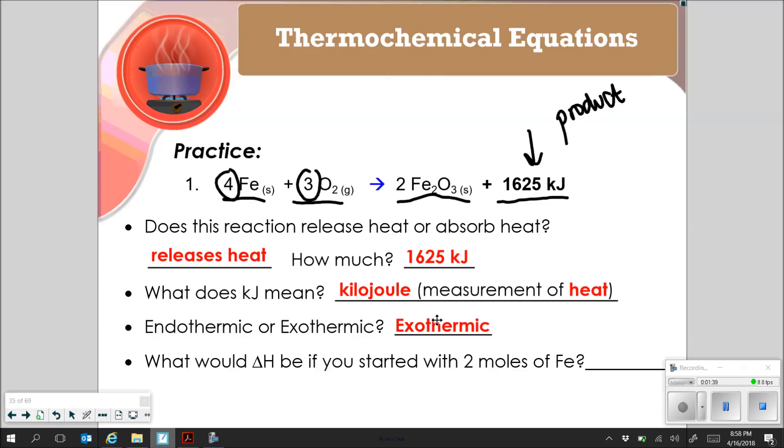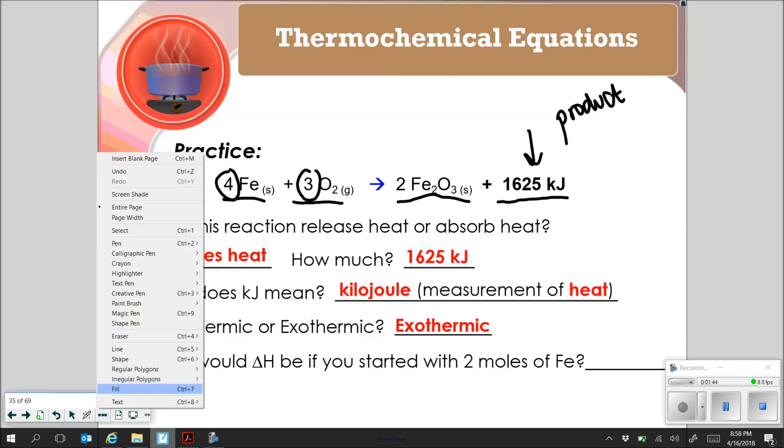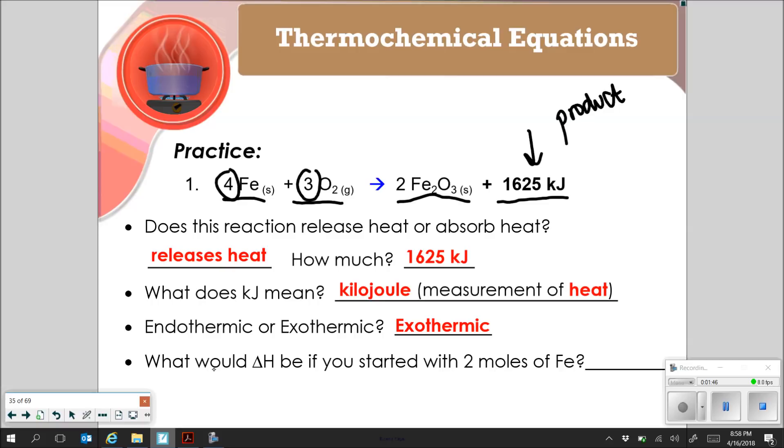What would delta H be if you started with 2 moles of Fe? I'm going to do this with dimensional analysis just to show you the whole process. If you can do it without it, you're welcome to. So if I've got 2 moles of Fe, according to my thermochemical equation, for every 4 moles of Fe, I have 1625 kilojoules. And when I multiply across and divide, I get 812.5 kilojoules. So my change in H for this, my overall enthalpy of my reaction is going to be 812.5 kilojoules, and that is going to be negative.